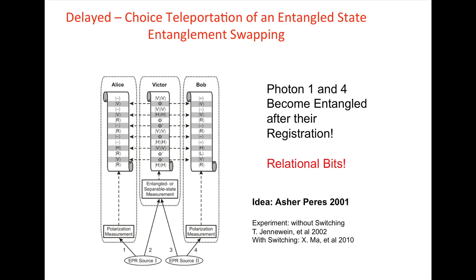The next picture, delayed choice teleportation and entanglement swapping, shows an experiment which was proposed by Peres in 2001. It's a funny idea: Peres proposed that you have two entangled sources. You take one photon from each of the sources separately, then propagate them and decide at a later time whether you project them onto an entangled state or not. If you project them onto an entangled state, the two outer photons turn out to be entangled; if not, the two outer photons are not entangled but remain entangled with their respective pair.